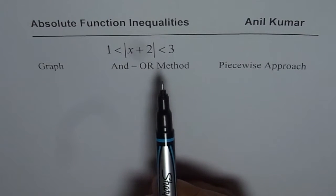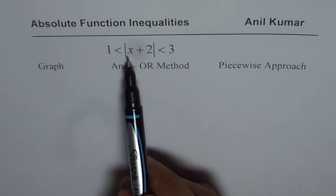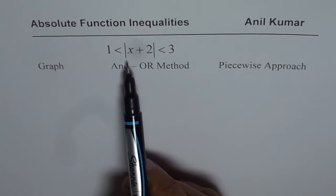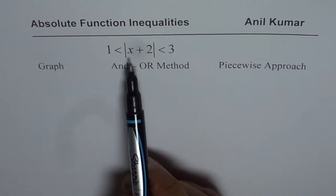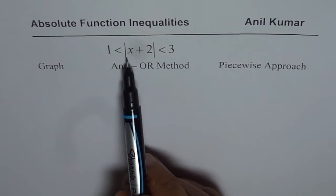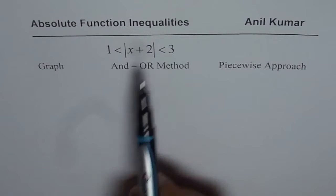Here we have a very simple example. The absolute value of x plus 2 is greater than 1 and less than 3. We need to find all possible values of x so that the absolute value of x plus 2 is within 1 and 3.